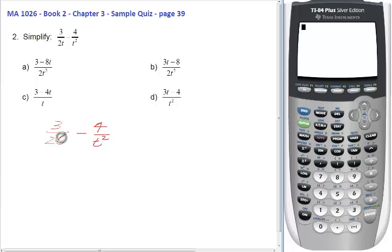Now we need a common denominator. When you're adding or subtracting fractions, you must have a common denominator. So the first thing you're going to do is find the LCD between 2t and t squared. What is the LCD between these two numbers?